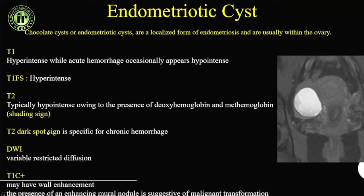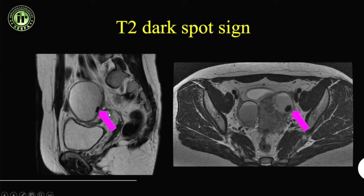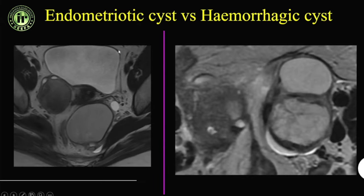Here you can see a shaded appearance with gradual fluid-fluid levels on T2. The dark spot sign is a non-enhancing dark spot — similar to what we saw in O-RADS where dark non-enhancing areas were not given higher O-RADS values. This T2 dark non-enhancing appearance is seen with endometriotic cysts.